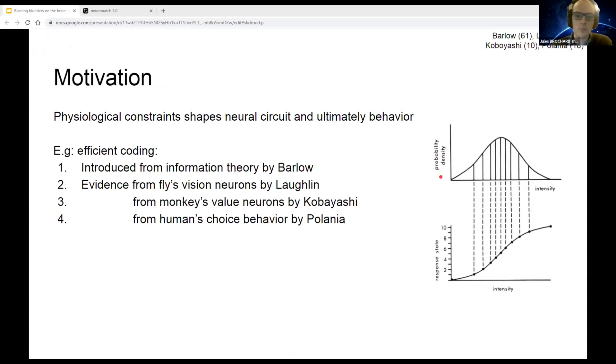A prime example is the idea of efficient coding proposed by Barlow in 1961, which states that given that neurons have limited range to fire and respond to an input, they should select which information to keep and which to filter out.